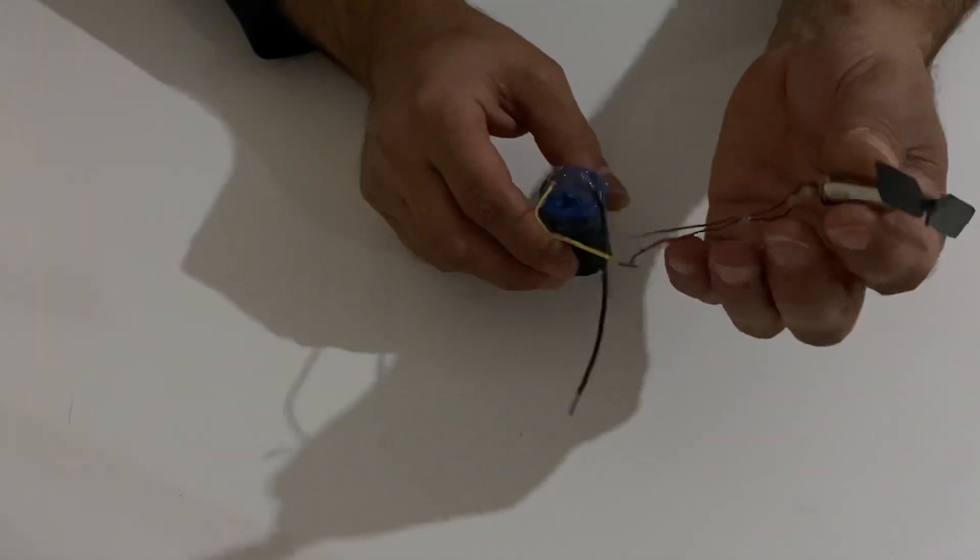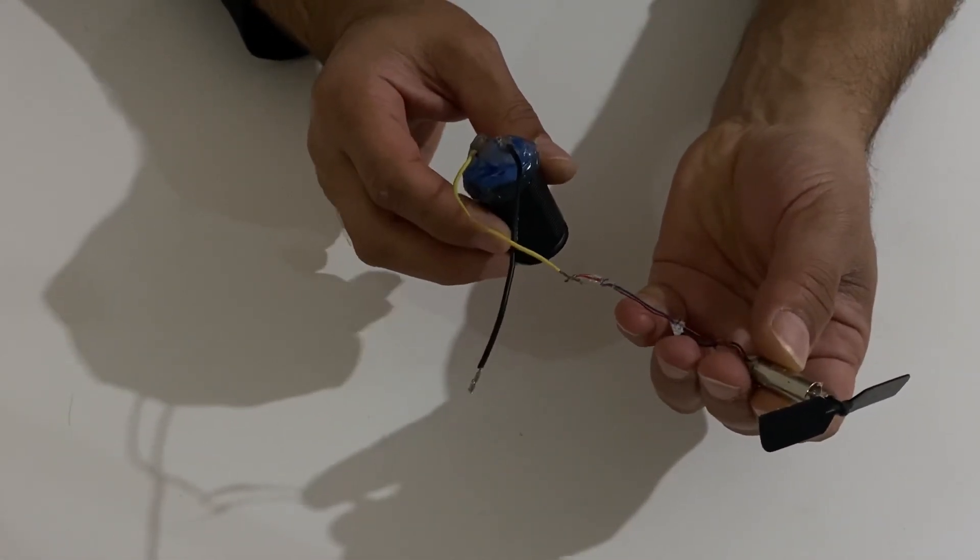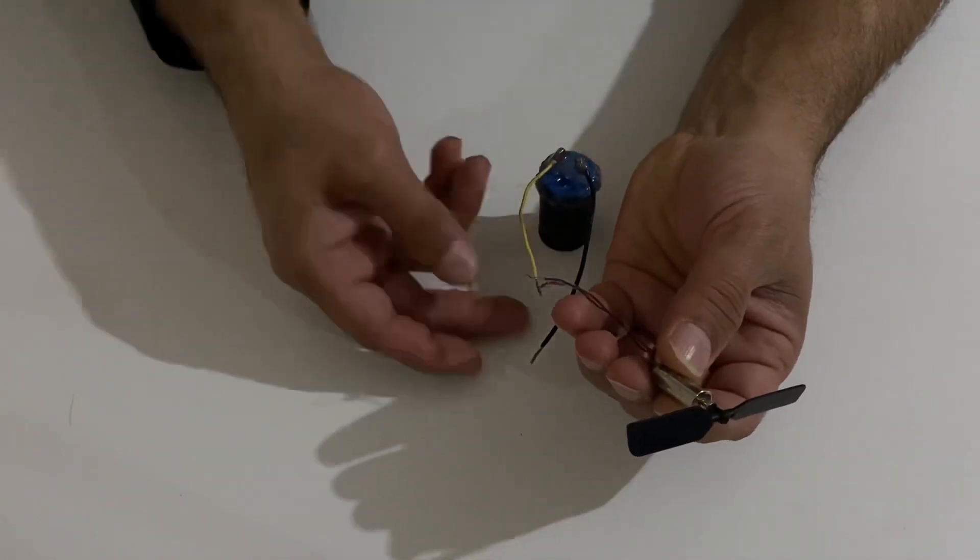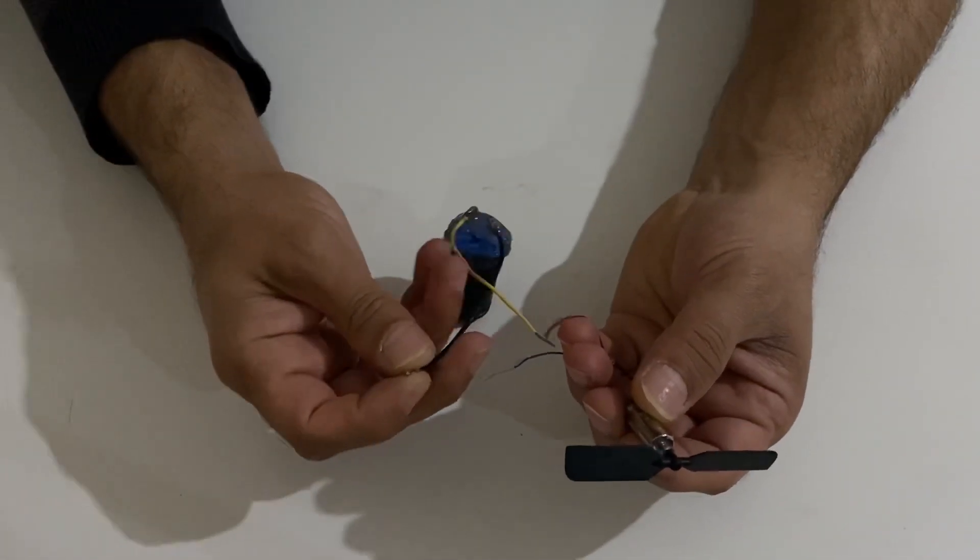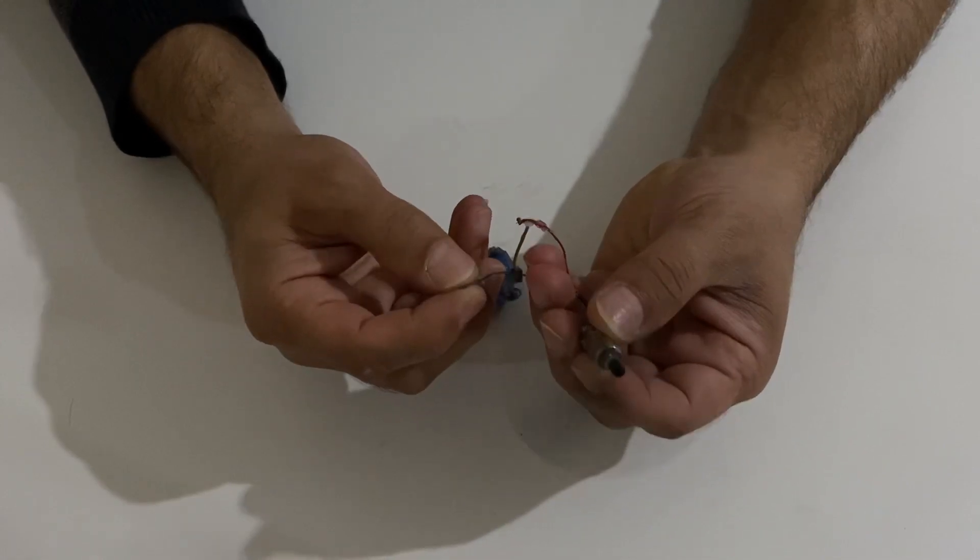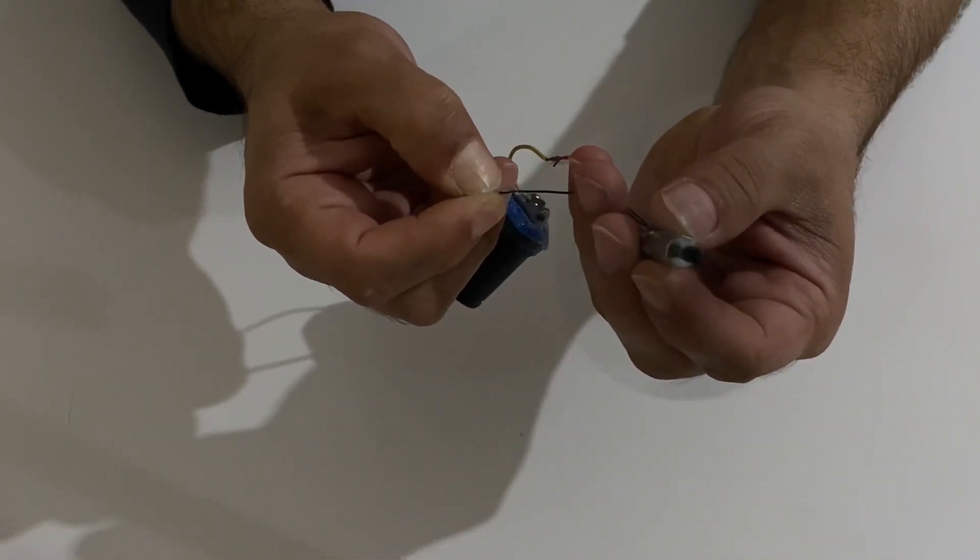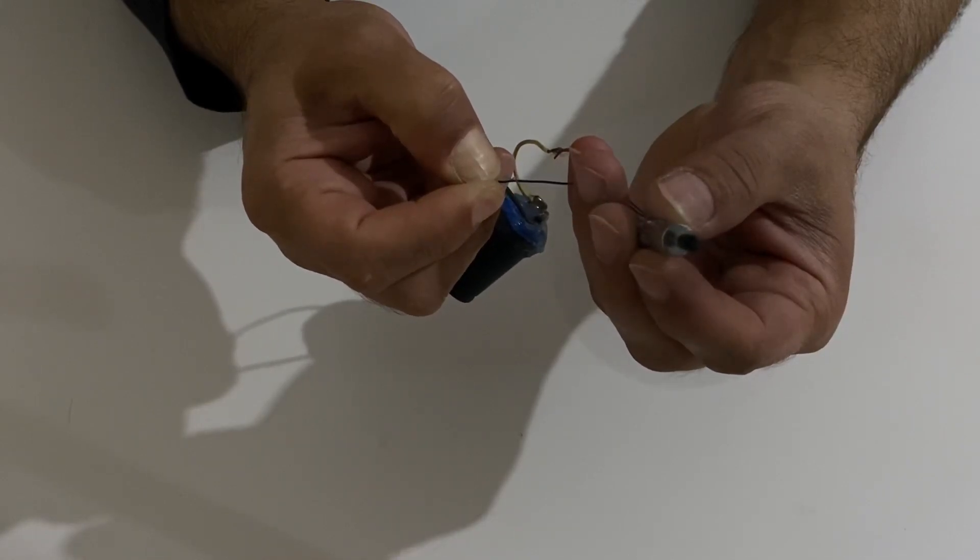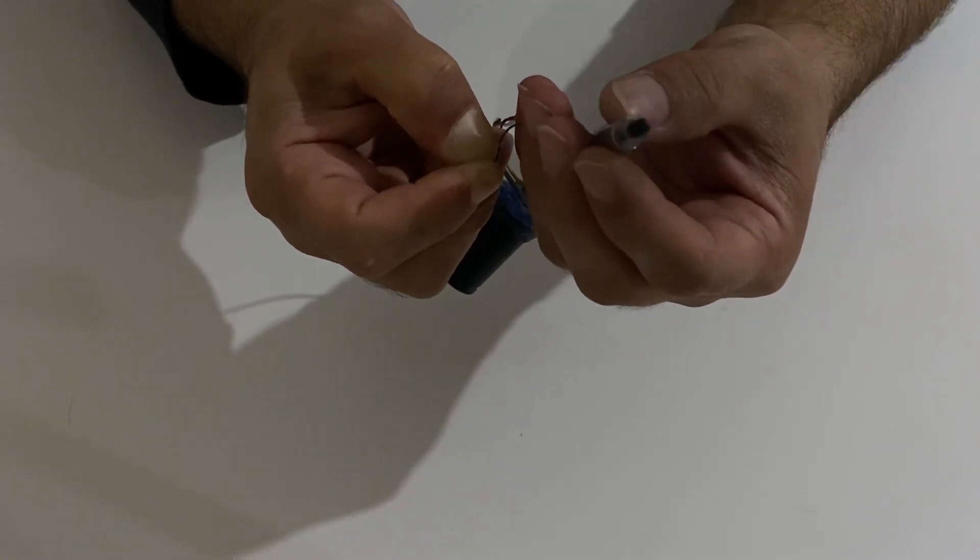Okay, my friends. I have a small coreless DC motor here. Now we will run this DC motor with my supercapacitor. Okay, let's just have a look. You see it's running pretty fast. It's working very well.